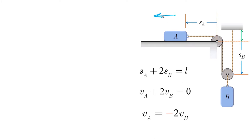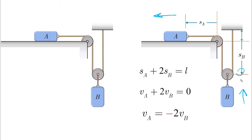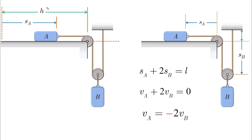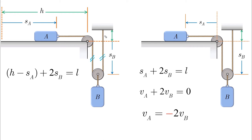In this system, vA equals minus 2vB — if A moves in the positive direction, B moves in the negative direction, opposite to the arrow. Now if we take the datum from another fixed point on the left side and point the vector to A, the length h minus sA appears in the chord equation. Adding 2sB plus the fixed segment equals L. Taking the derivative: h goes away, giving minus vA plus 2vB equals zero.